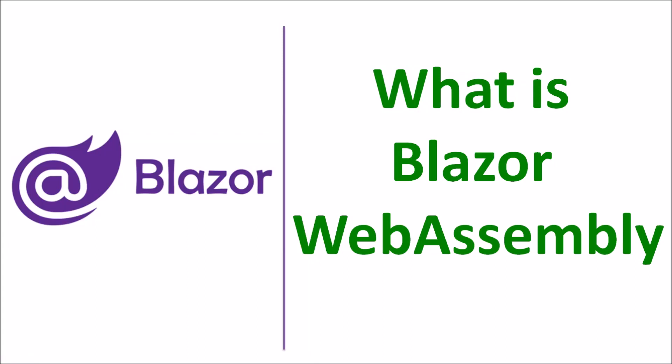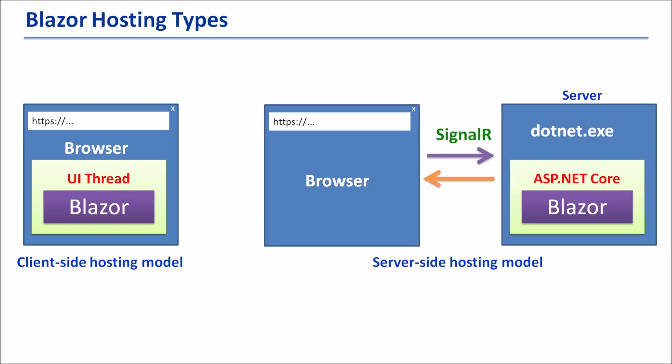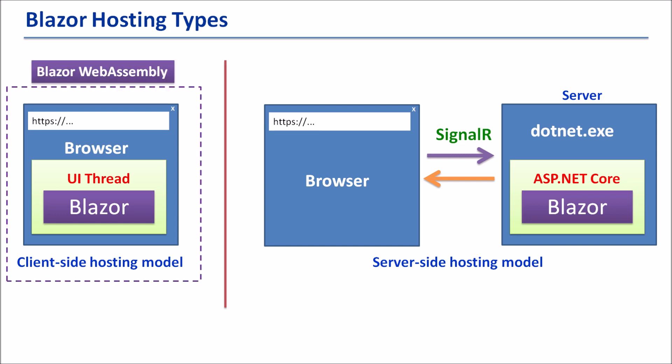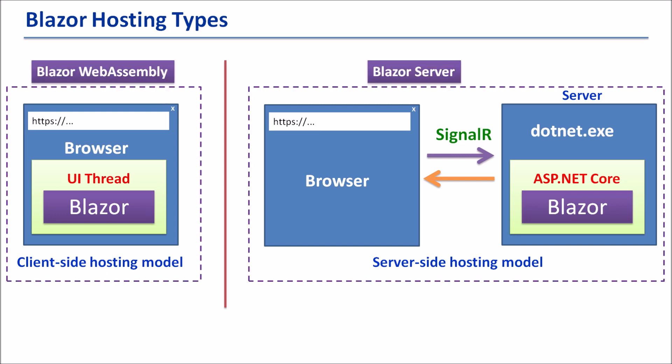In this tutorial I am going to introduce what is Blazor WebAssembly. Blazor is a new web framework which has different hosting models including client-side and server-side. In the client-side hosting model, Blazor is designed to run in the browser on a WebAssembly-based .NET runtime. In the server-side hosting model, Blazor is designed to run in ASP.NET Core. The client-side hosting type is called Blazor WebAssembly and the server-side one is called Blazor Server.